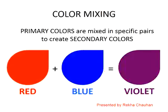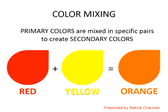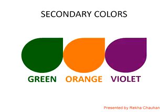When two primary colors are mixed in equal amounts, a different hue will result. This new hue is called a binary or secondary color. When we mix red with blue, we get violet. When we mix blue and yellow, we obtain green. When we mix red with yellow, we obtain orange. So by mixing the primary colors, we get three secondary colors: green, orange and violet.